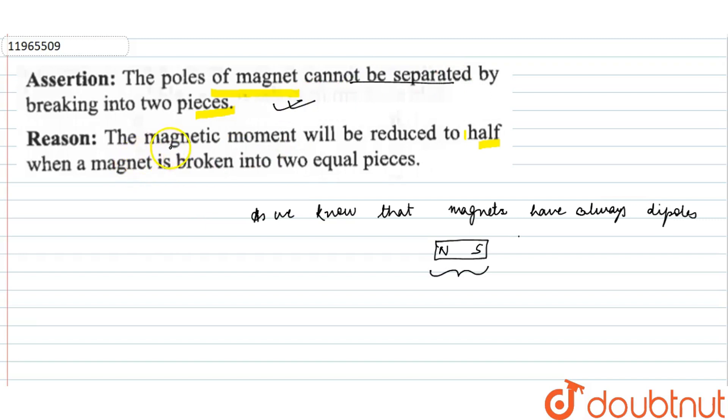And the reason is that the magnetic moment will be reduced to half when a magnet is broken into two equal pieces. So if this is broken into two equal pieces, like this, again north-south generates. Again, north-south generates. But area is reduced to half.